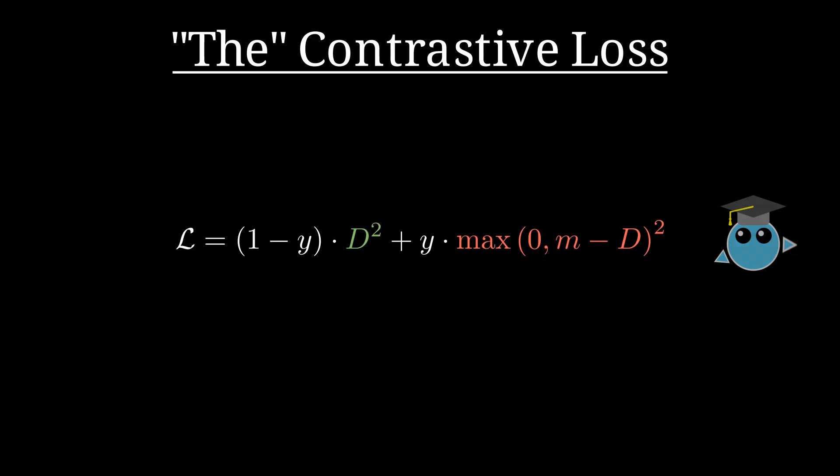By combining these two cases into a single formula, we get the final expression for the contrastive loss, which handles both positive and negative pairs. Indeed, when we have a positive pair, y is equal to zero, and by minimizing the loss, we get the points closer together.